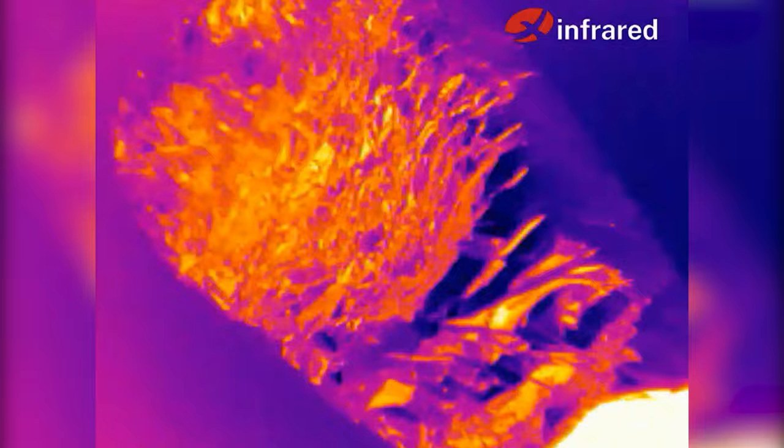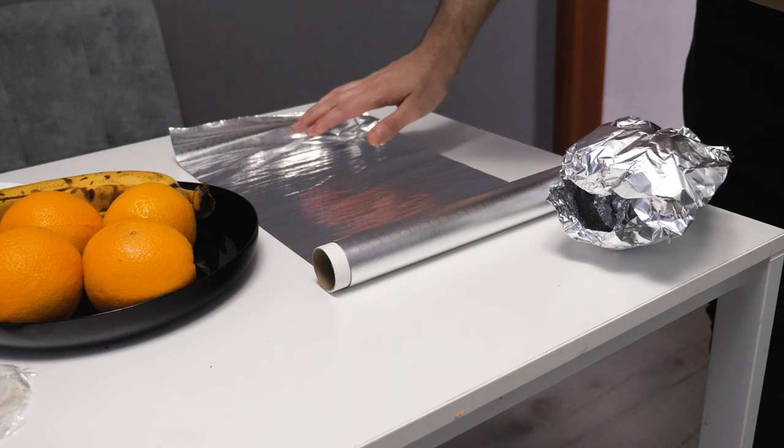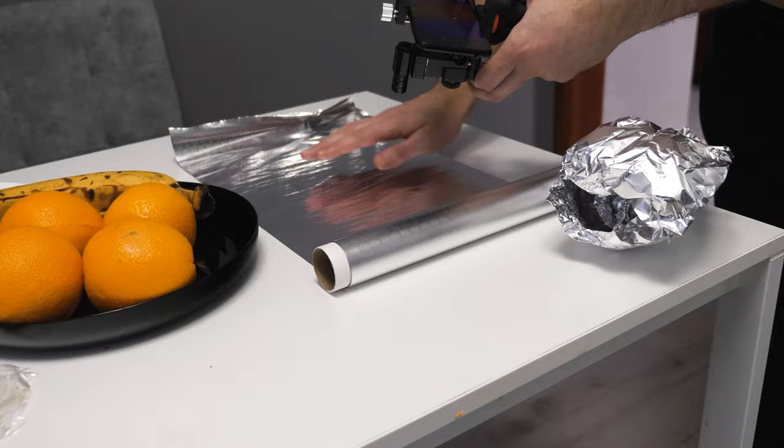All objects emit infrared energy, known as a heat signature. An infrared camera, also known as a thermal camera, detects and measures the infrared radiation of objects. The camera converts infrared data into an electronic image that shows the apparent surface temperature of the object being measured.